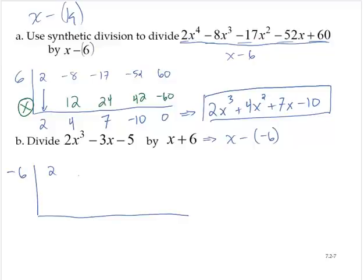Our coefficients must be in descending order. Notice that we have an x squared term missing. If we think about it, there's a 0x squared here. So I'm going to put a 0 in its place, and then negative 3 and negative 5.